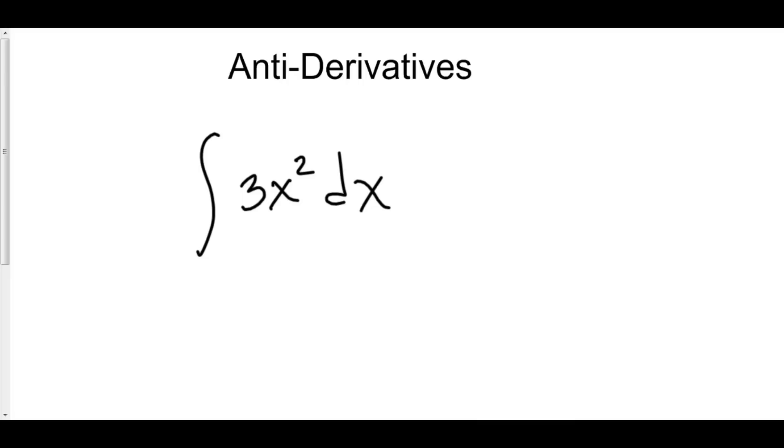We have to find the antiderivative of 3x squared. Now, the question is, what is an antiderivative? Well, mathematicians are the least creative people in the world in creating names. An antiderivative is exactly what it might sound like.